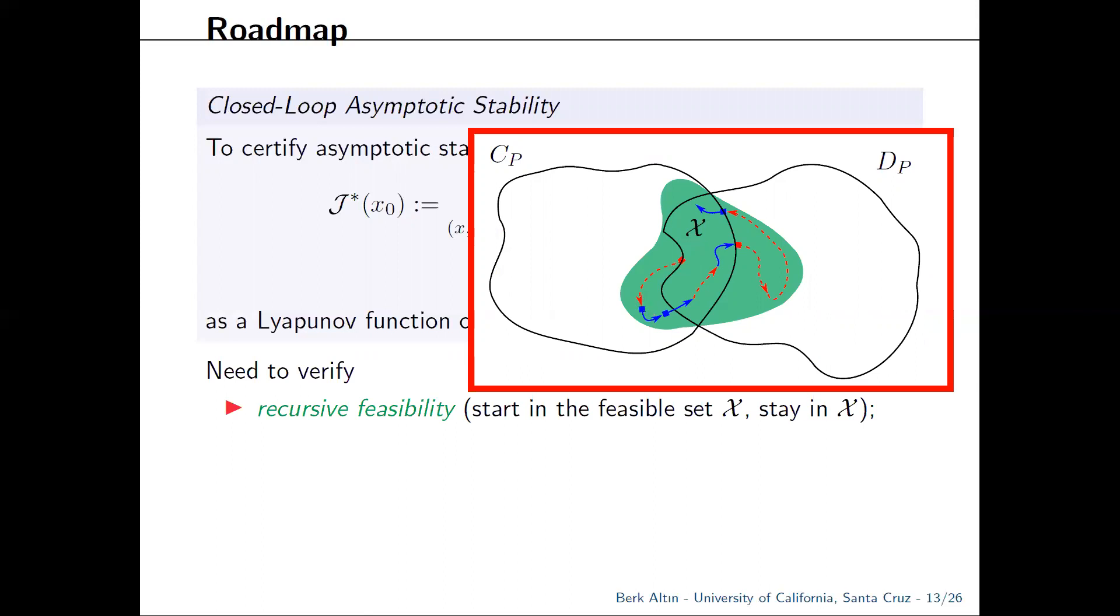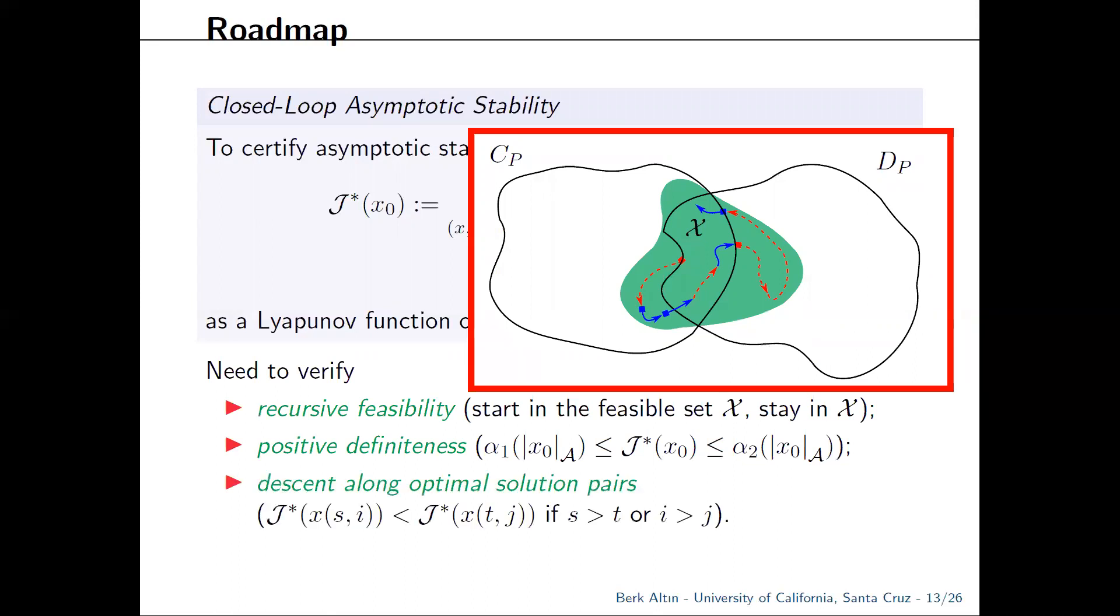In other words, the feasible set should be forward invariant under the MPC scheme. On top of that, you need to show that the value function is positive definite with respect to A, which we characterize using the distance to A and class K infinity functions, and it is decreasing along optimal trajectories.